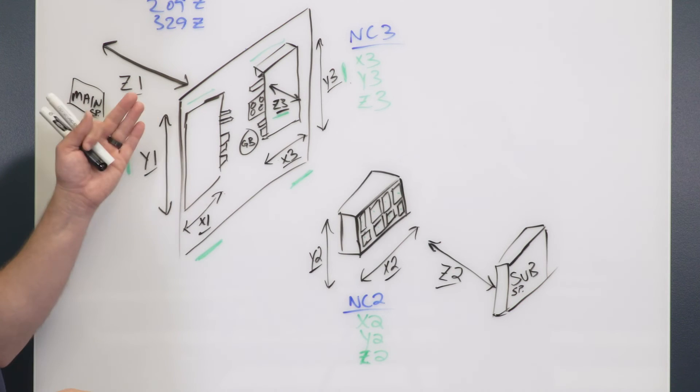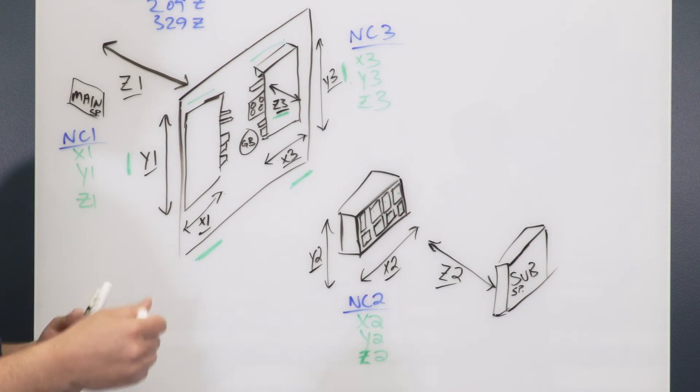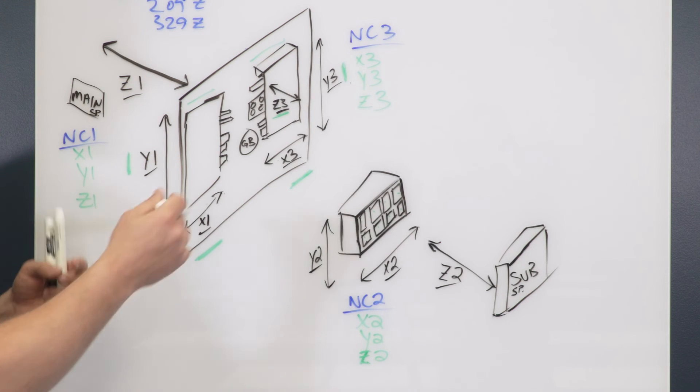You can really slash cycle times with a three-path control because you can double up on your operations and have three tools in the cut at the same time.